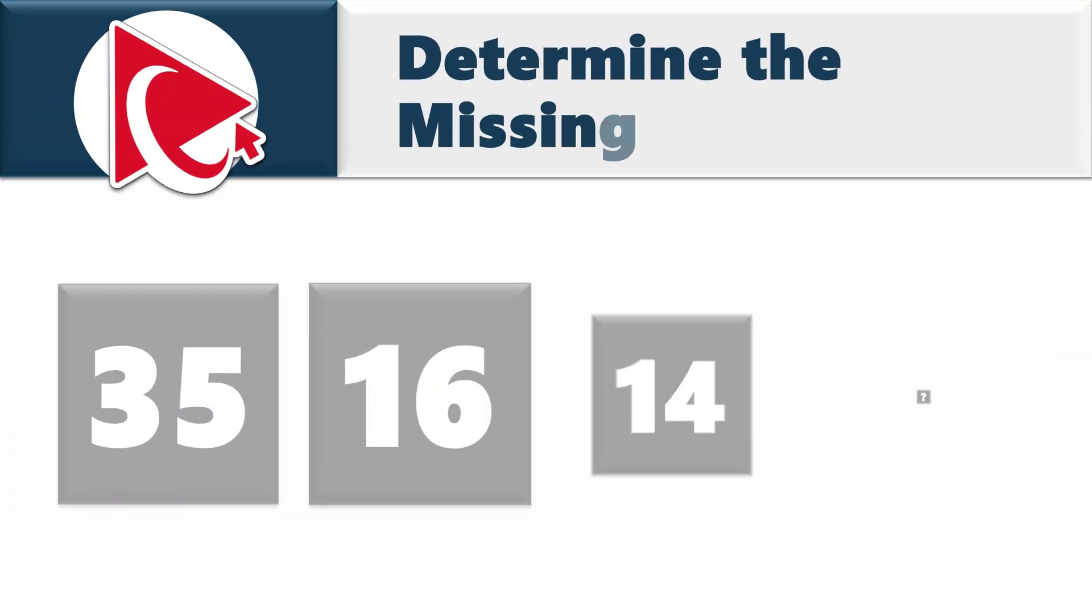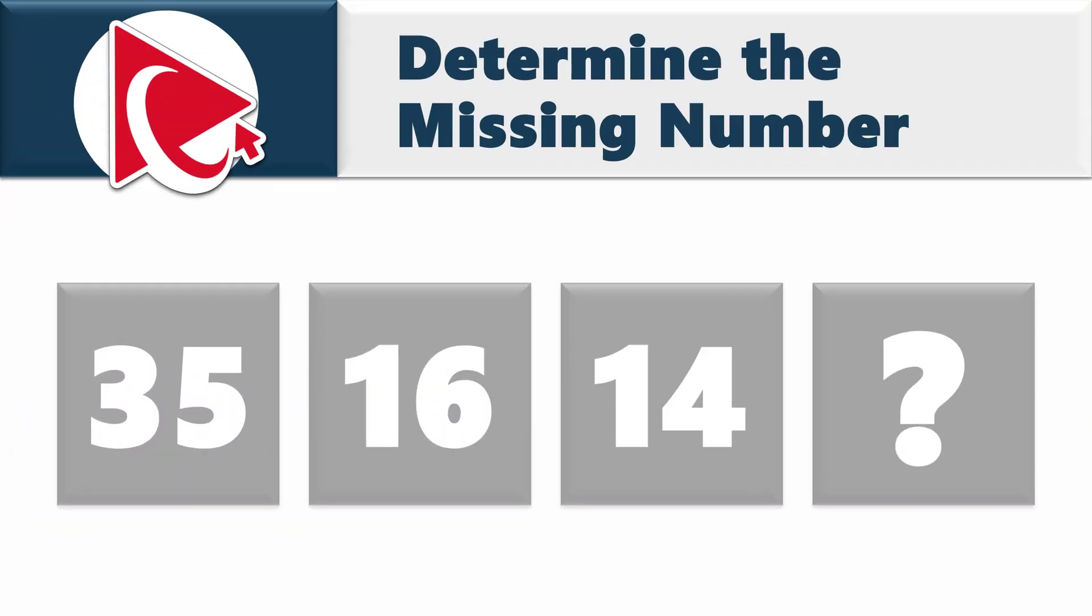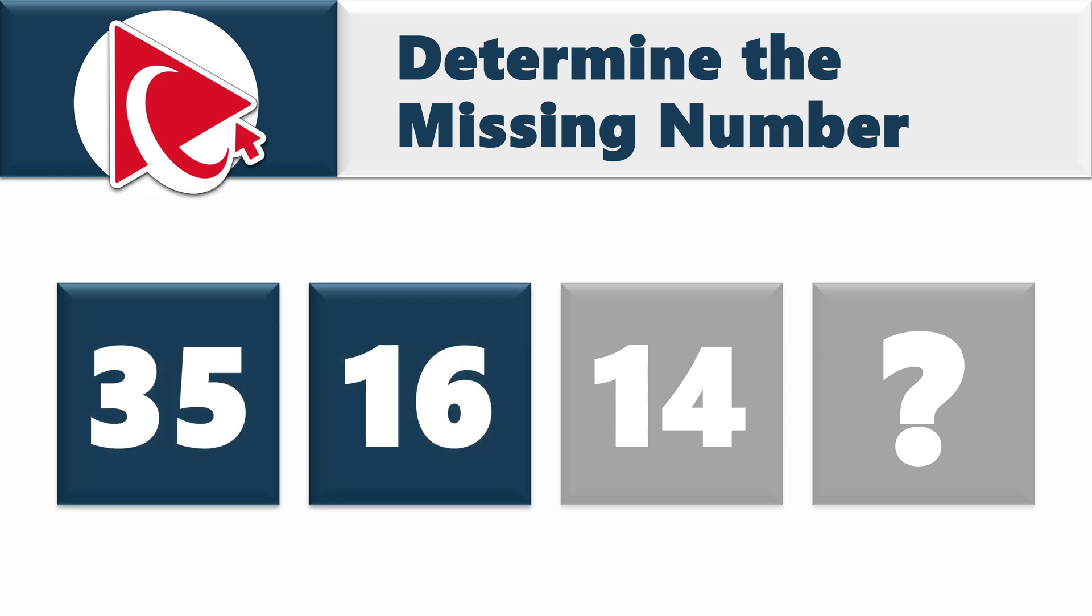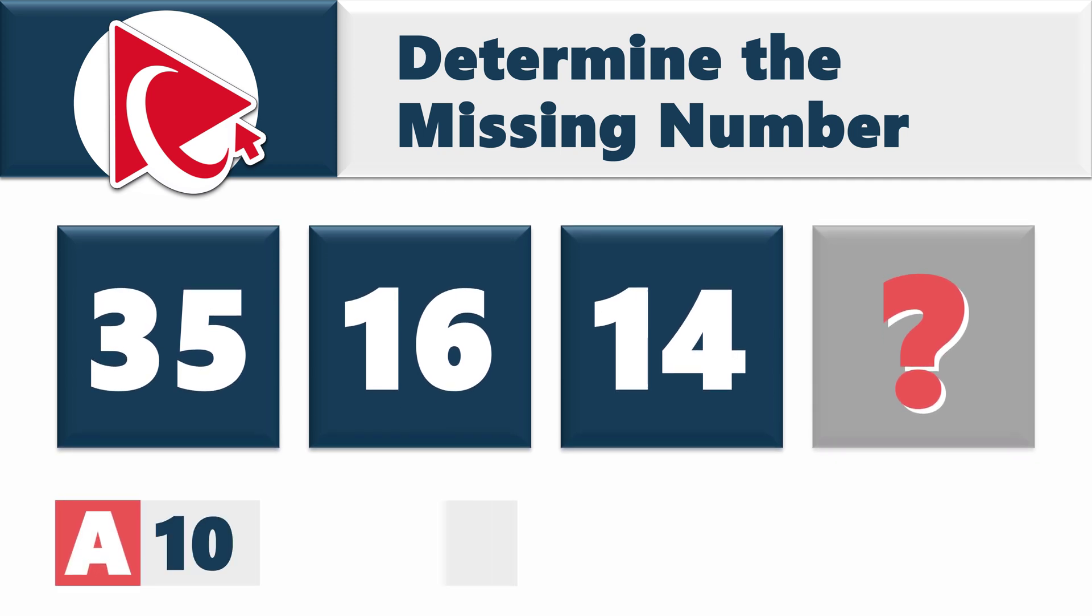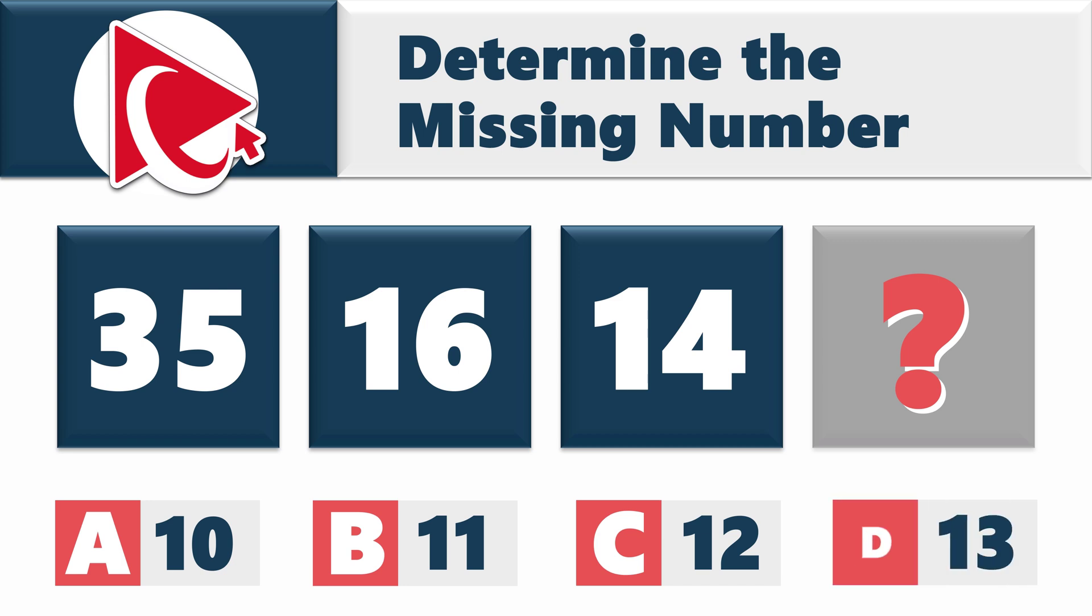You're presented with a sequence, and you need to determine the missing number in the sequence. The sequence is 35, 16, 14, and then comes the missing number, which you need to select out of four possible choices: Choice A, 10. Choice B, 11. Choice C, 12. And choice D, 13. I think we can agree on one thing. It's a tricky question.